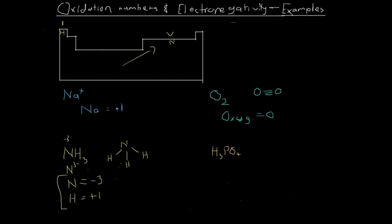The last one is slightly more complex — phosphoric acid. Phosphoric acid is technically a molecular compound, but it can break down into ions like other acids. We can break phosphoric acid down into three hydrogen ions and one phosphate ion. The same way we dealt with sodium earlier, we have three hydrogen cations each with charges of positive one, so the oxidation number of each hydrogen is going to be plus one.